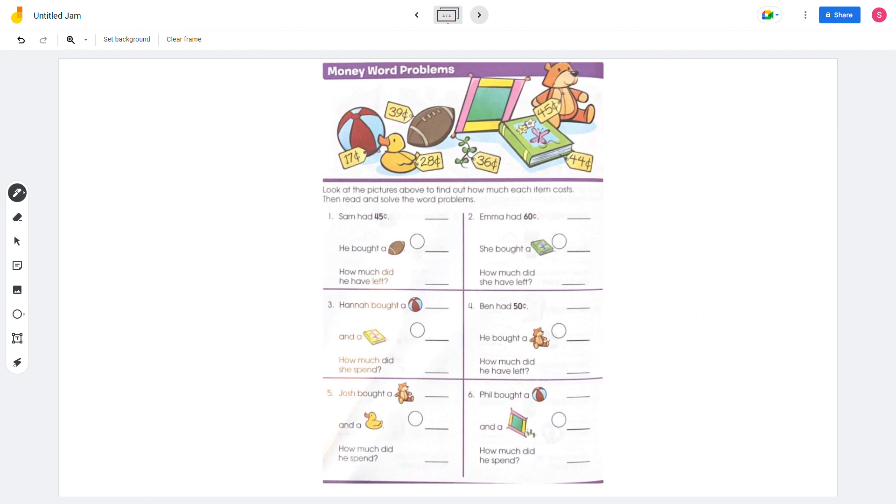On the next page, look at the pictures above to find out how much each item costs, then read and solve the word problems. Sam had 45 cents. He bought a football. So he had 45 cents, and he bought a 39-cent football. You can't subtract 9 from 5, so borrow 10, which makes 6.